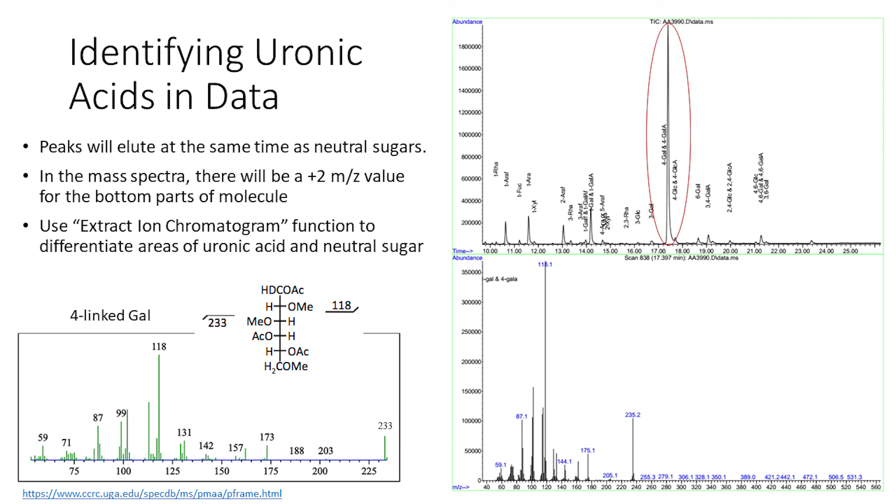When integrating this peak in enhanced data analysis, that integration will have both the neutral sugar and the uronic acid. The extract ion chromatogram function is required to determine how much of that area corresponds to the neutral sugar or the uronic acid.